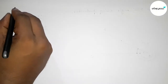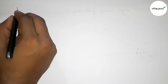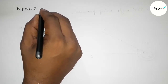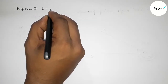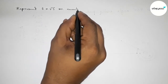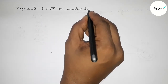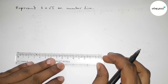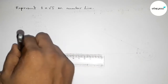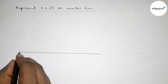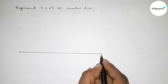Hi everyone, welcome to SI Share Classes. Today in this video we have to represent 3 plus root 3 on a number line in an easy way. So let's start the video. First of all, we have to draw a number line — drawing a line of any length and taking arrow marks on both sides.